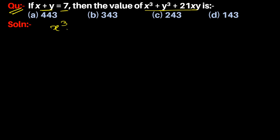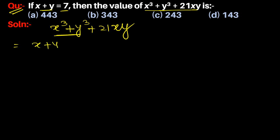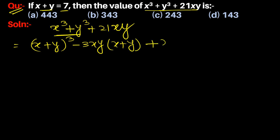So first we write x cube plus y cube plus 21xy, and we use the identity: x cube plus y cube is equal to x plus y whole cube minus 3xy into x plus y. So the expression becomes x plus y whole cube minus 3xy into x plus y plus 21xy. Now we put the value of x plus y equal to 7.